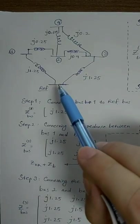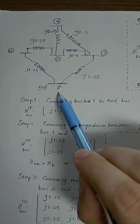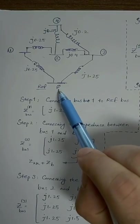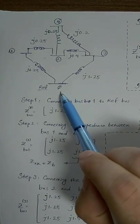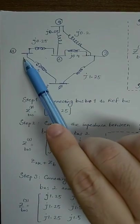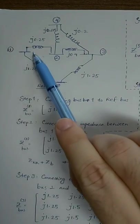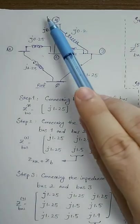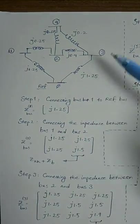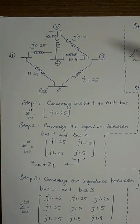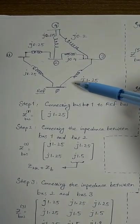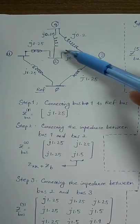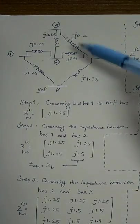We have five different bus bars, one of which we call the reference bus — that's why we put number zero for that. Following that, we have bus bar one, bus bar two, bus bar three, and of course bus bar four. And between each and every bus bar we have a kind of impedance.